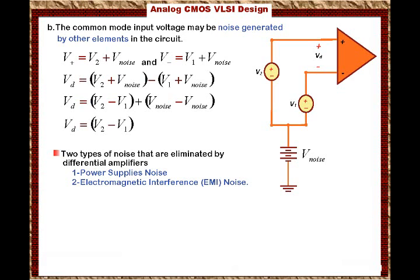By Ampere's law, if there is a current flowing through a conductor, that current creates a magnetic field. If this current is changing — as often happens in digital circuits adjacent to analog circuits that clock up and down — then by Faraday's law, that changing current will induce a voltage in adjacent conductors through the magnetic field. The differential amplifier allows us to eliminate that induced noise.